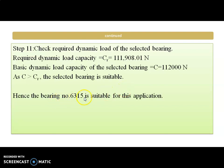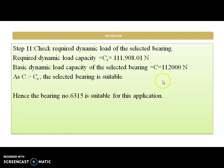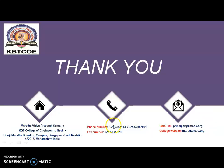Hence bearing number 6315 is suitable for this application. In this way we can select the bearing from the manufacturer's catalog. If the capacity is less than the requirement we go for the next series bearing, redo the calculation, and check the required capacity against the bearing capacity. Thank you.